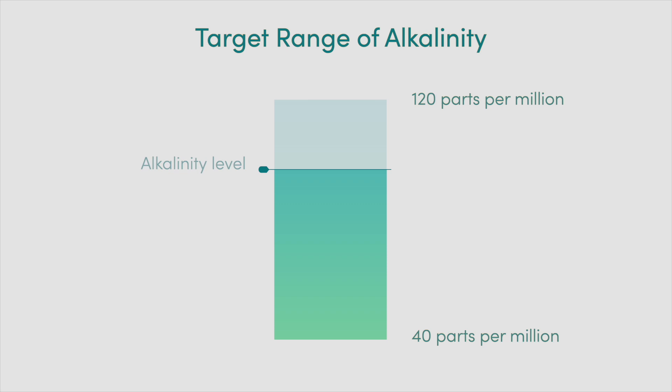Step 2: The alkalinity level in your hot tub should be between 40 and 120 parts per million.